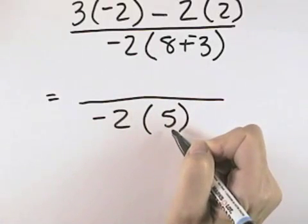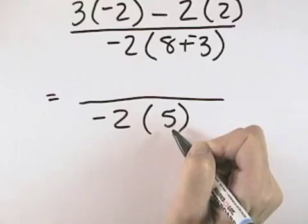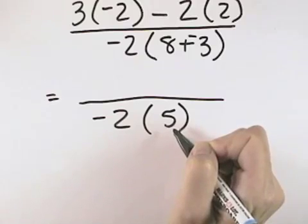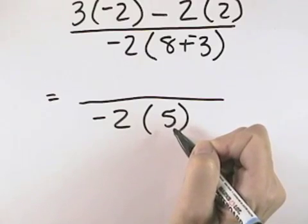Now, continuing with the order of operations, we want to do multiplication and division from left to right next, because we have no more grouping symbols and no more exponents.